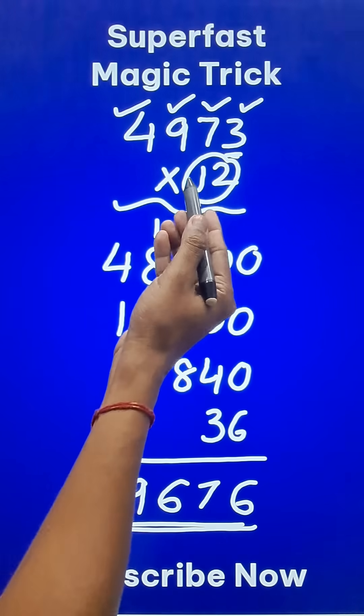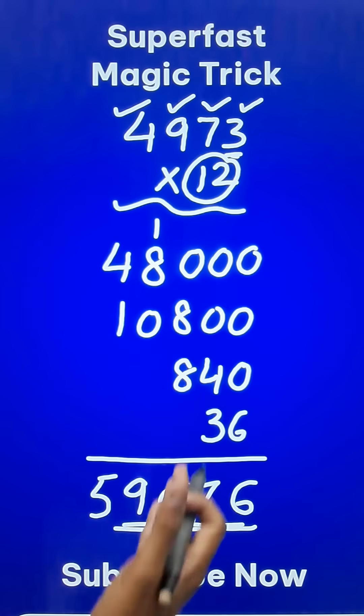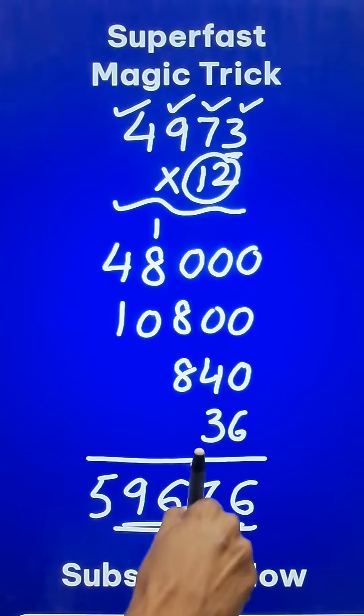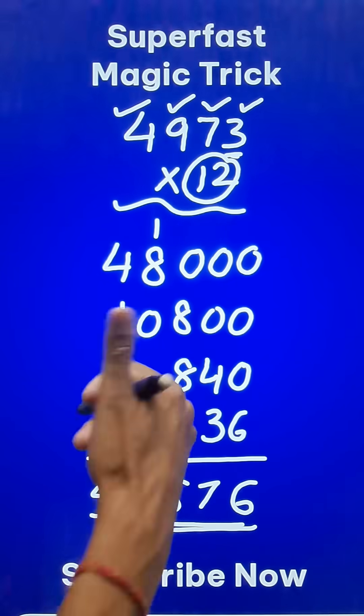And now pick up the calculators and check 59676 is the product and if you want to learn the complete concept of partial products and partial quotients click this related video here in the link. All the best.